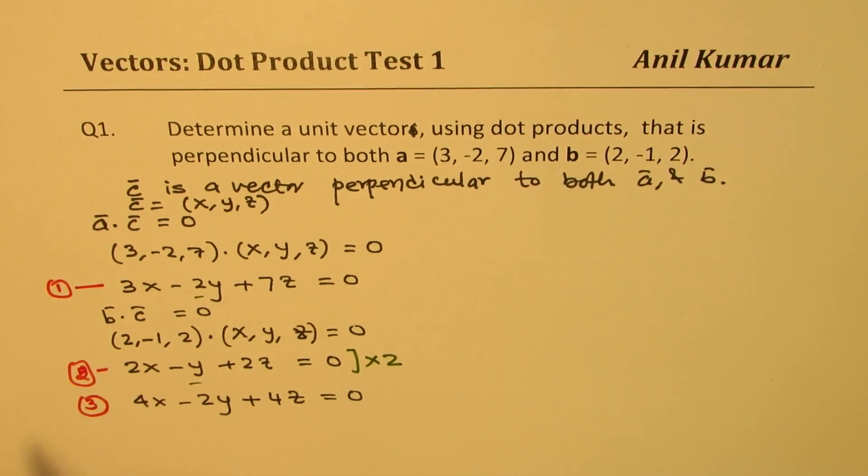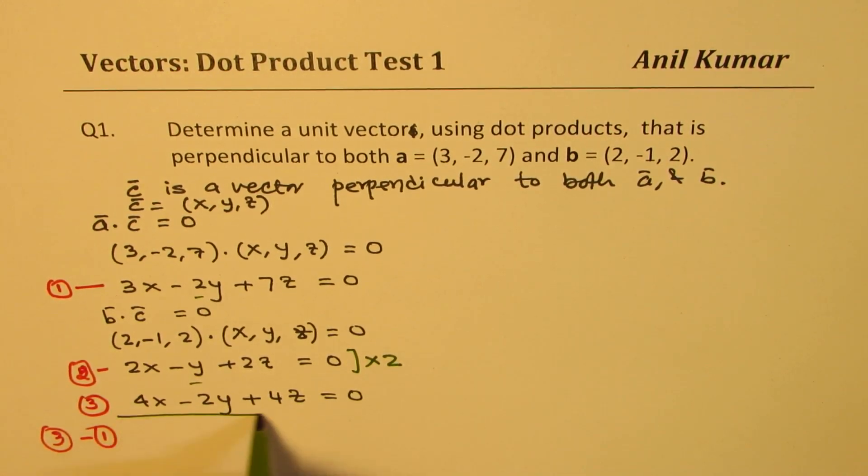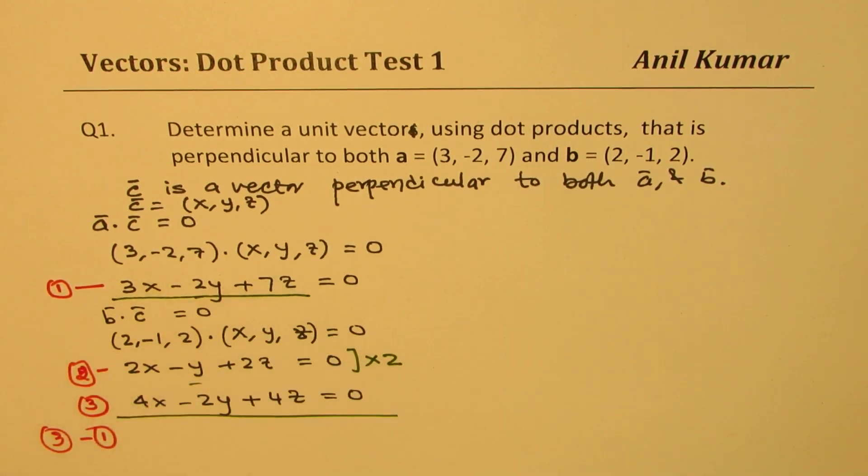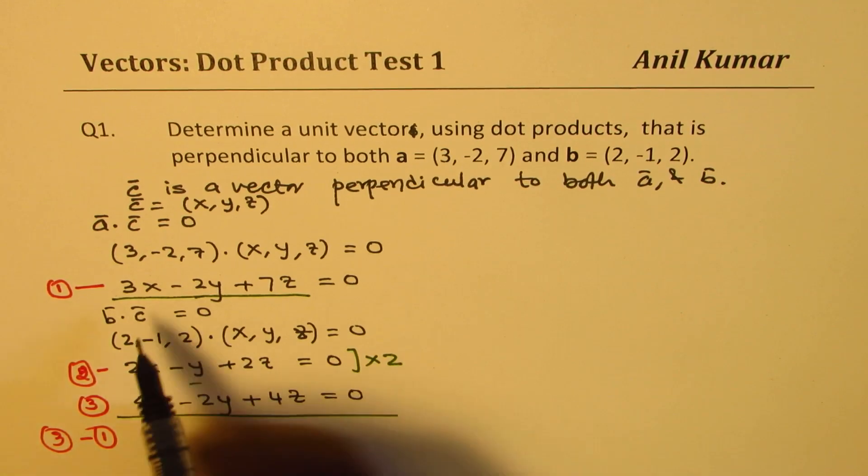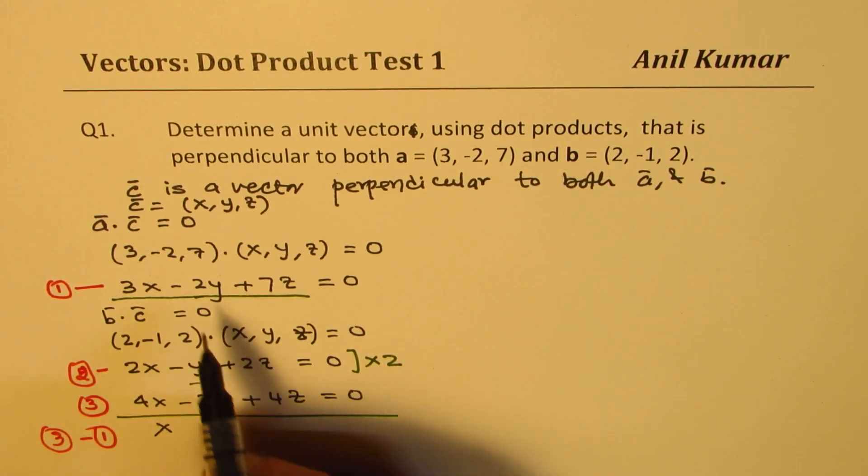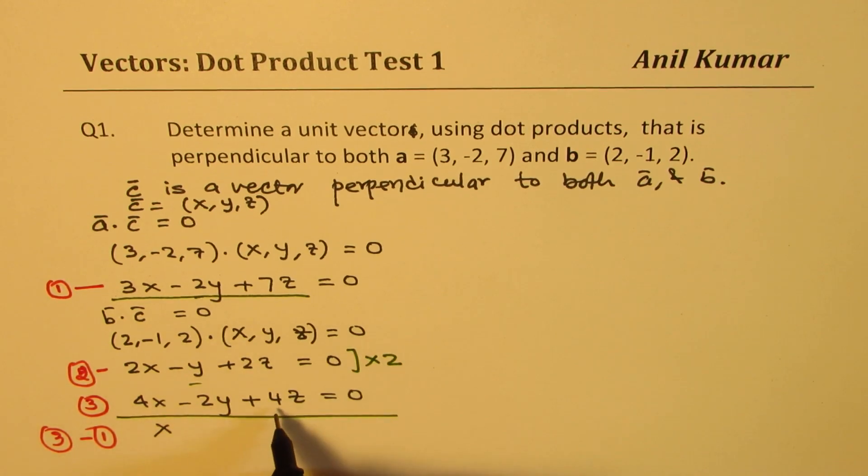And now, if I do equation 3 minus equation 1, what do I get? So from 3, I am taking away equation 1. So we get 4 - 3 as x, minus 2y minus 2y is 0. And this minus that gives me -3z equals to 0. That is to say that x is equal to 3 times z.